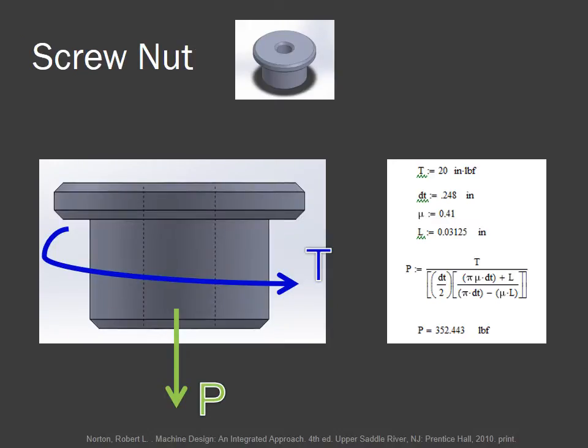To analyze a screw knot, we use a formula that states P is equal to T divided by DT over 2 times Pi Mu DT plus L divided by Pi DT minus Mu L. This leads us to, for a 40 pound twisting force, downward pressure of 352.443 pounds force.